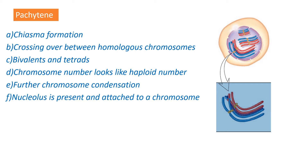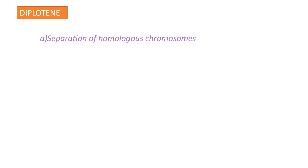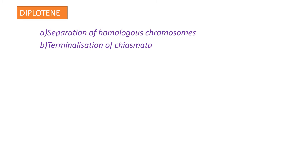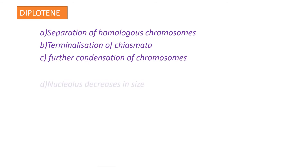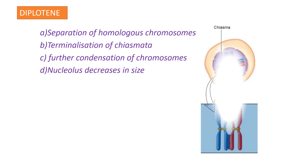The next sub-stage is diplotene. During diplotene, homologous chromosomes separate from each other except at some points called chiasmata. As diplotene progresses, there is movement of these chiasmata towards the ends of the homologous chromosomes — this is called terminalization of chiasmata. There is further condensation of chromosomes in this stage and the nucleolus decreases in size.